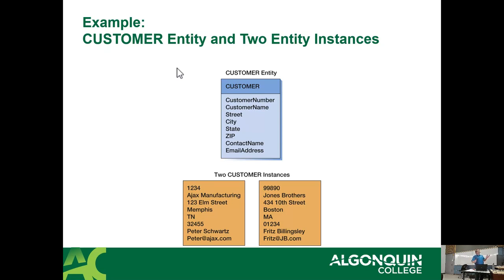Here is an entity called customer. It has a bunch of attributes — basically, attributes are what describe the entity. We have two instances: an instance of Ajax Manufacturing and an instance of Jones Brothers. The entity defines how an instance is described.